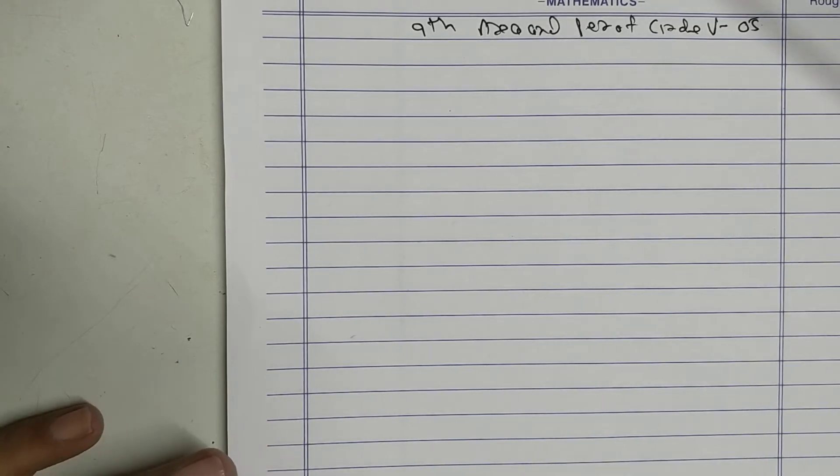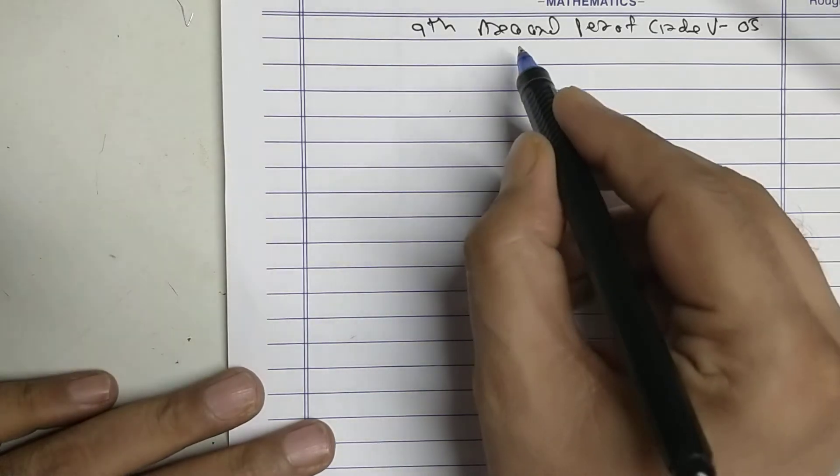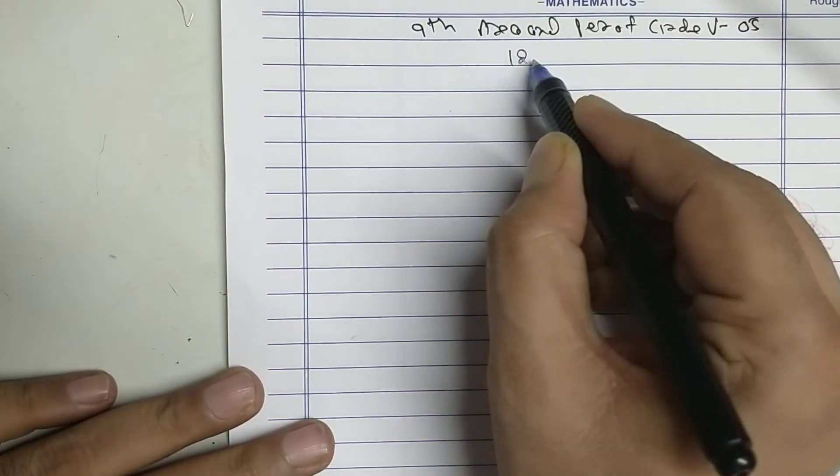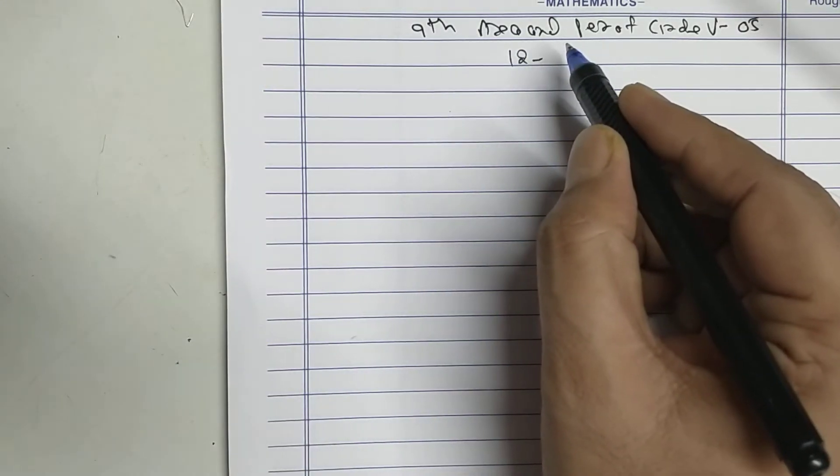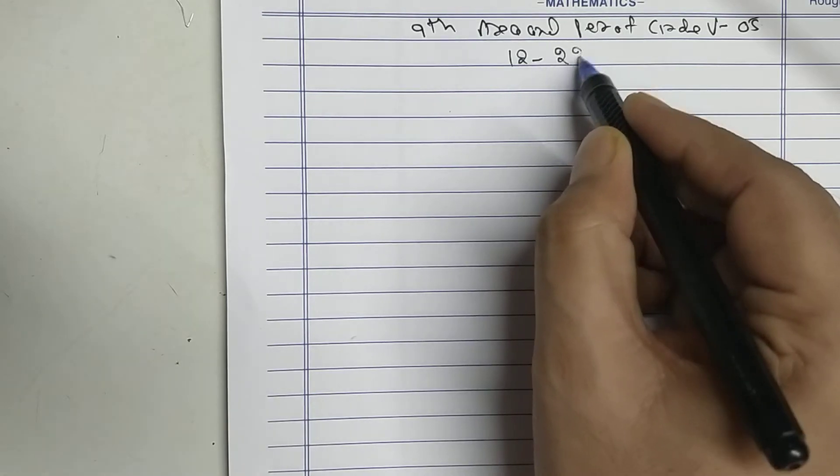Ninth area and perimeter of circle, video number 5. I will be doing from sum number 12 to 22.